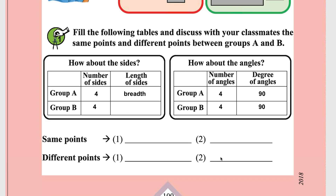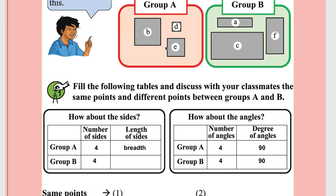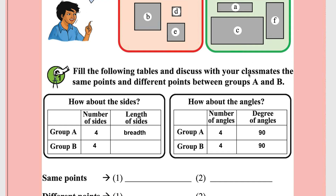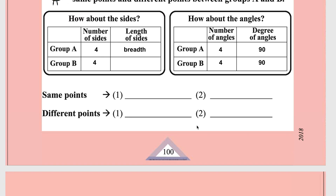A second difference is the area formula. In Group A (square), the area is side squared. In Group B (rectangle), the area is length multiplied by breadth.